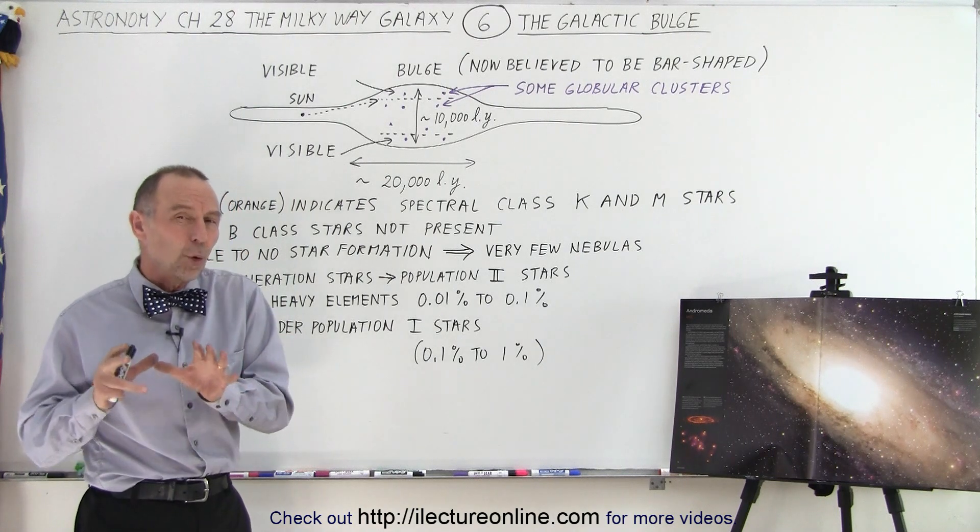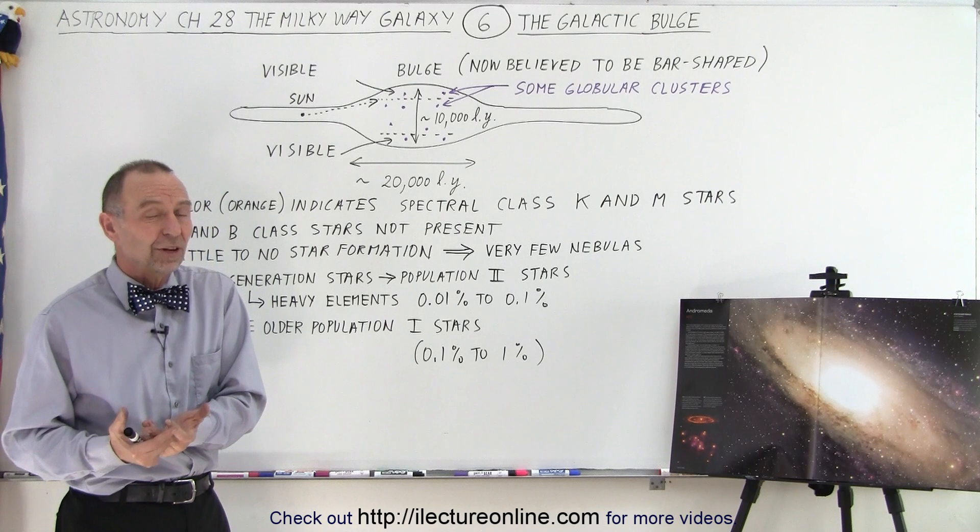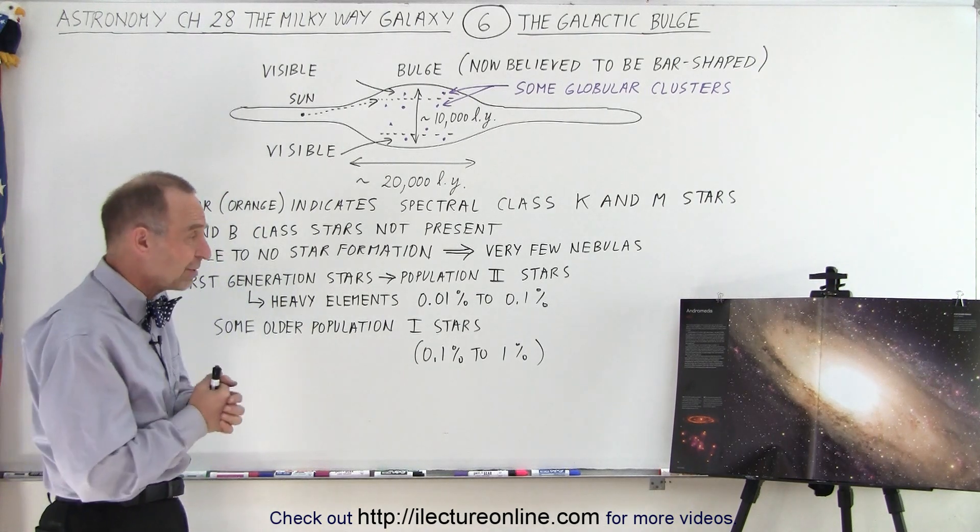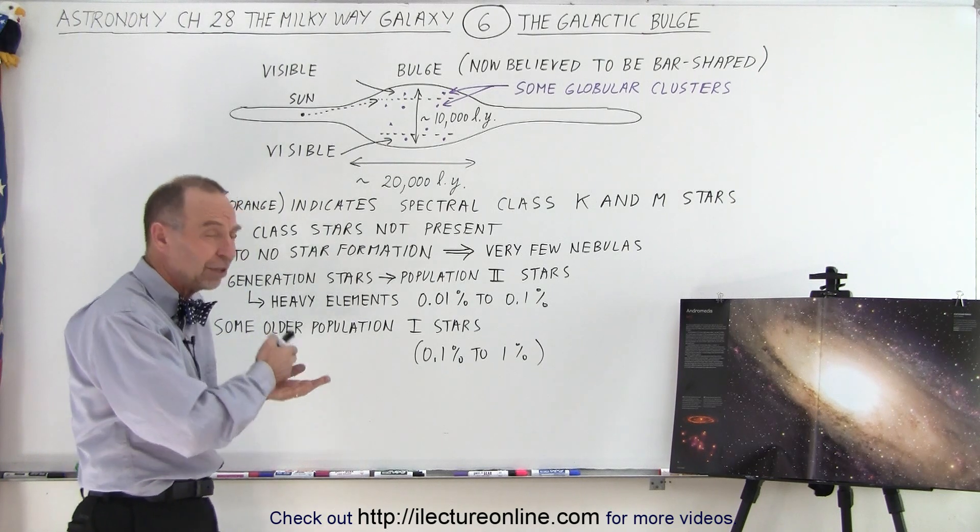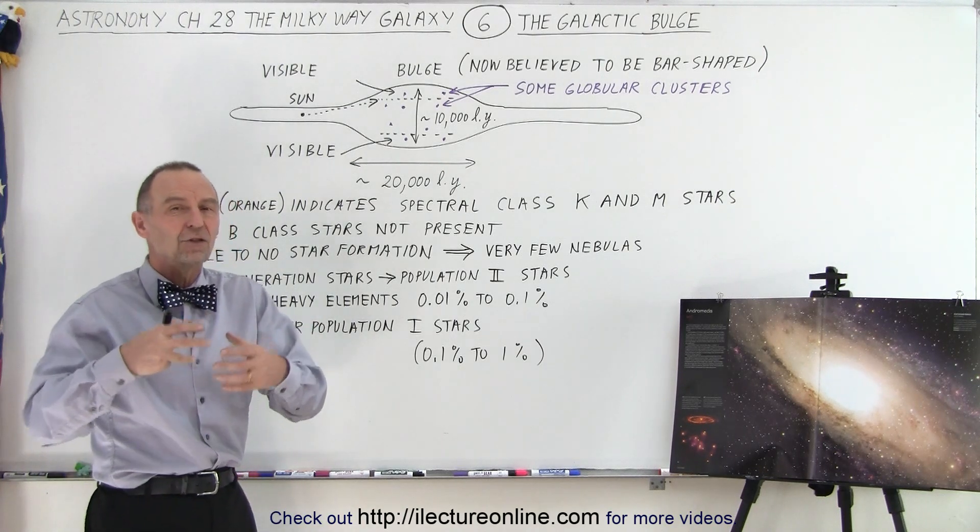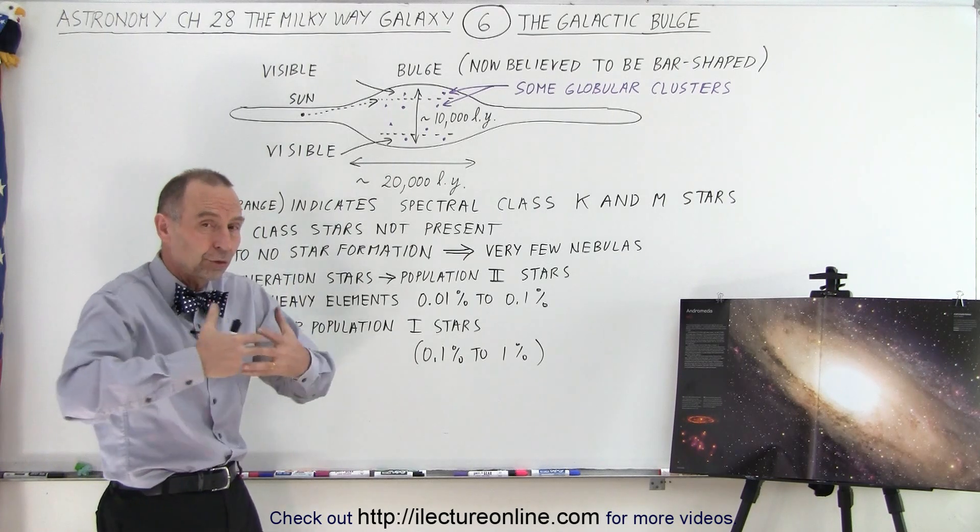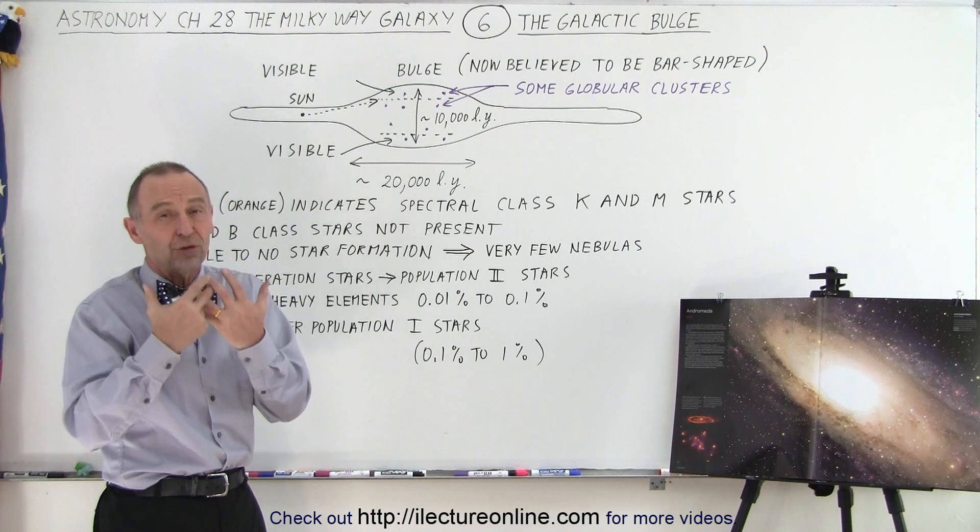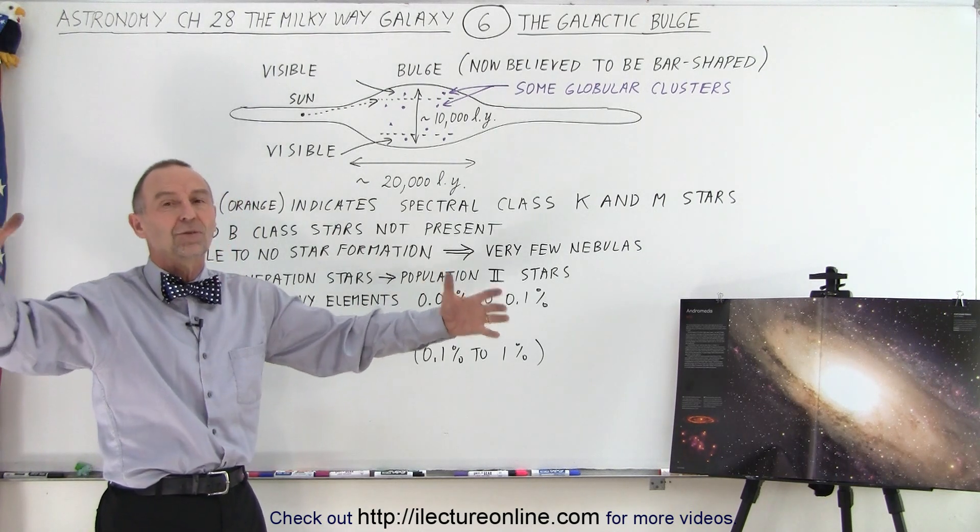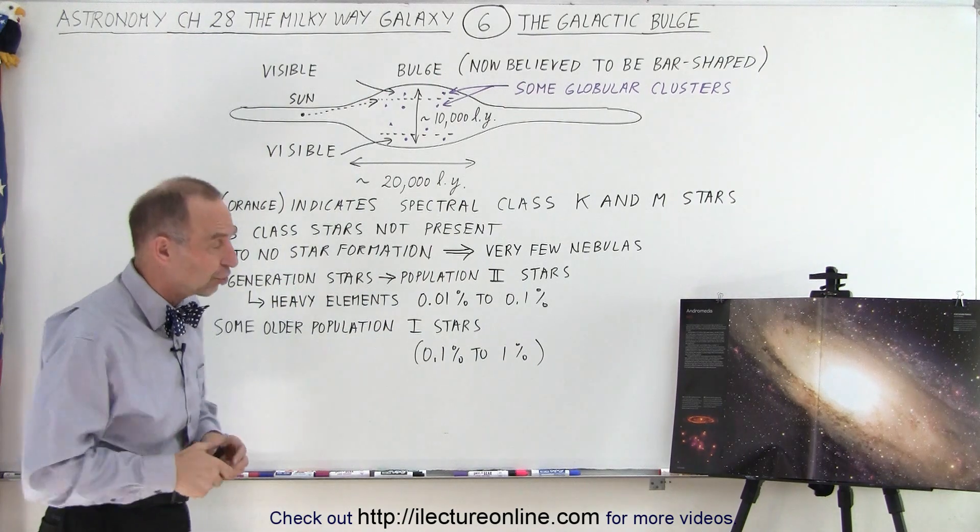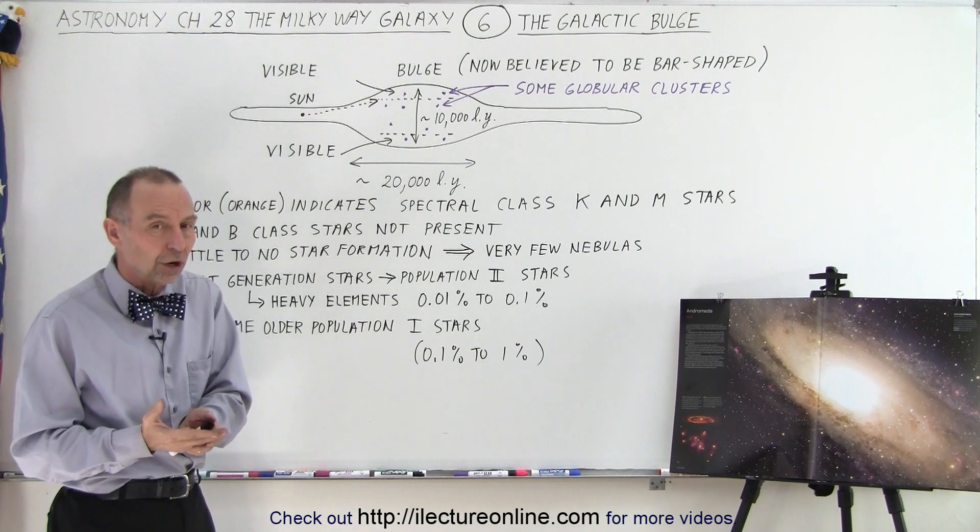We do sometimes see some older Population I stars. Now, our Sun is a Population I star, but it's only about 4.5 billion years old. There's some older Population I stars, and those are typically called Population I stars because they contain some of the heavy elements. Whenever a very large O and B-type star goes through its final stages, they usually eject enormous quantities of these heavier elements that then get mixed with the nebulas, who then start forming newer stars. And so that's why the newer stars tend to have more of those heavy elements than the older stars.